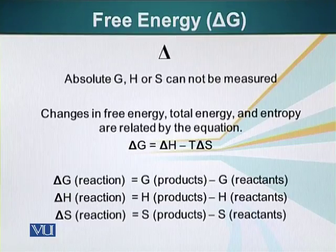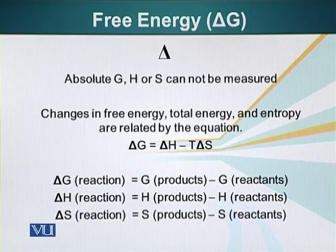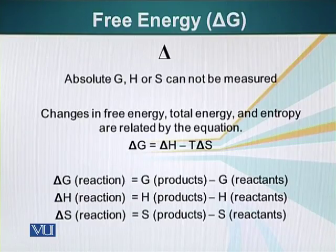We can express this equation as delta G equals delta H minus T times delta S. Here delta G represents the change in usable energy — the usable energy of products minus the usable energy of the reactants. Delta H represents the total energy of the products minus the reactants. Similarly, delta S represents the unusable energy of the products minus the unusable energy of the reactants.